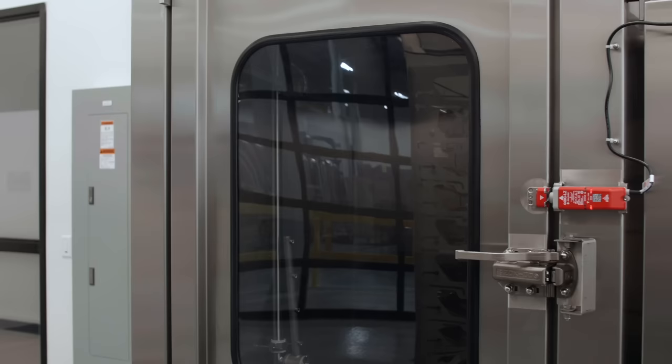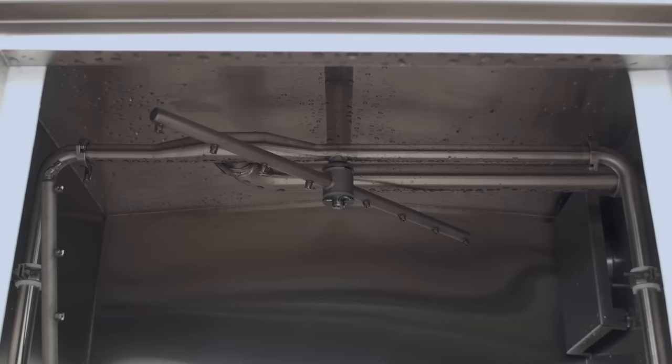For complete spray coverage, six hydraulically-driven spray arms are positioned on the top, sides, and bottom of the washer's cabinet.